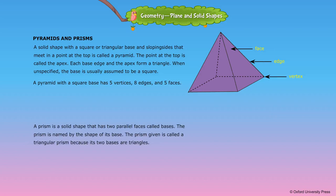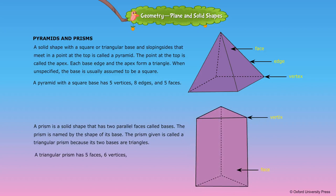The prism is named by the shape of its base. The prism given is called a triangular prism because its 2 bases are triangles. A triangular prism has 5 faces, 6 vertices, and 9 edges.